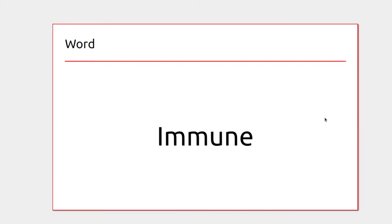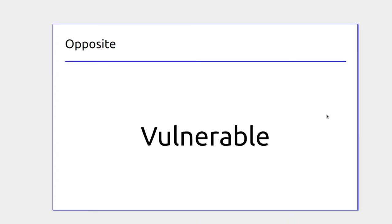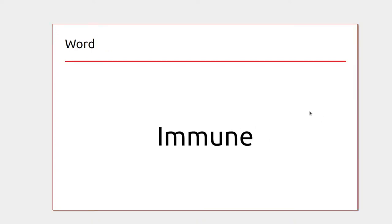Some people might be immune to certain things, where it won't affect them. Vulnerable is where something would affect them — they might have a compromised immune system. Someone might be immune because they've had it before, like with chicken pox.